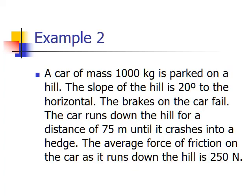Example two. A car of mass 1000 kilograms is parked on a hill. The slope of the hill is 20 degrees to the horizontal. The brakes of the car fail and the car runs down the hill for 75 meters until it crashes into a hedge. The average force of friction on the car as it goes down the hill is 250 newtons.